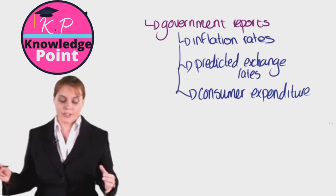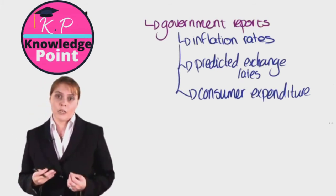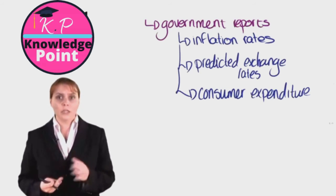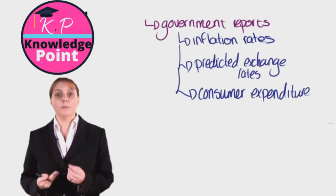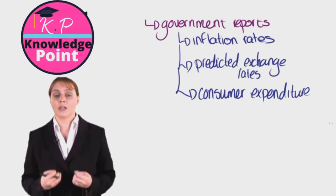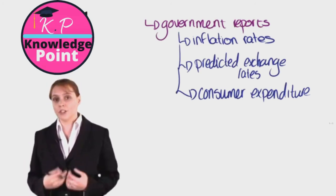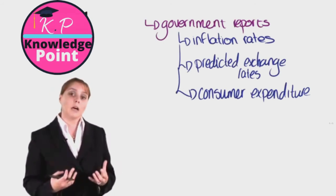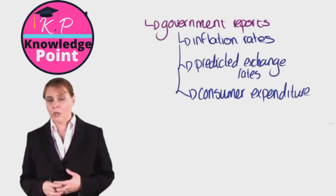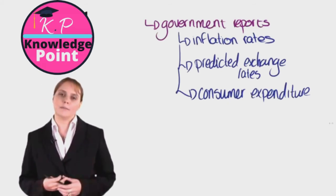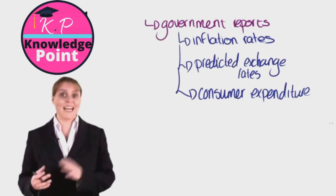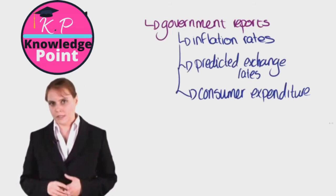Other information that might be included in government reports would be consumer expenditure — how much money are people spending? Are people currently spending quite a lot of money, going on holidays, buying luxury goods? Or, like during a recession, are people more likely to keep their money in the bank and build up their savings? This is going to have an impact on our company. If consumer expenditure is low and our product is a luxury item, we may need to plan for some difficult times ahead. Or, is our product something that is necessary to people, like food, and is therefore less likely to be affected by changes in consumer expenditure?